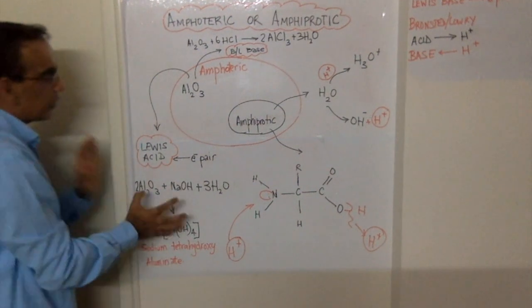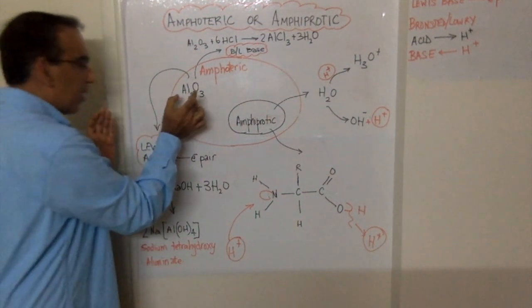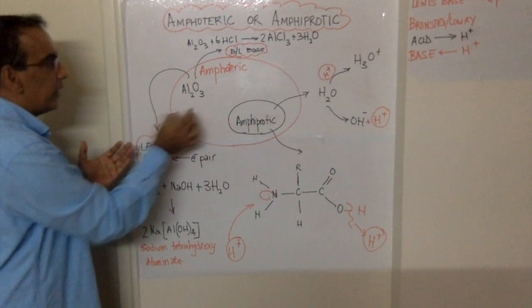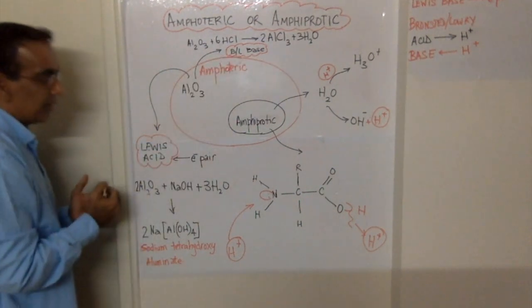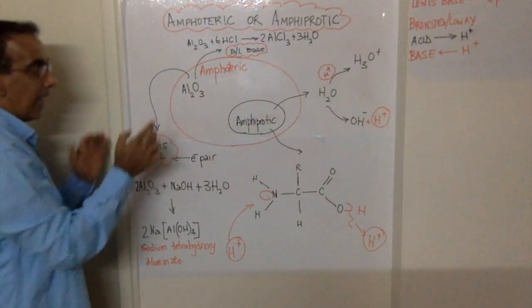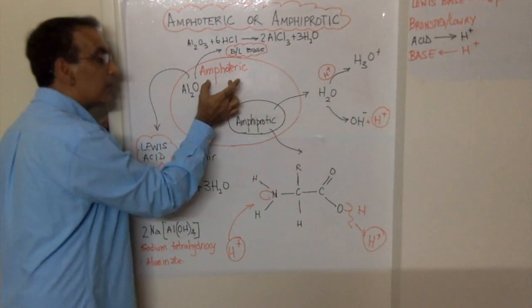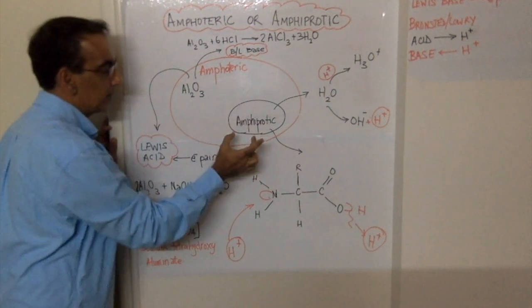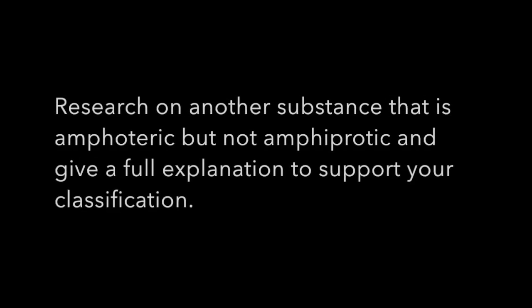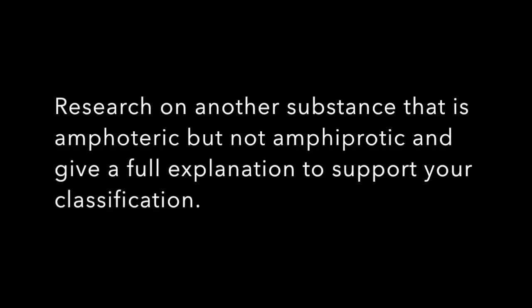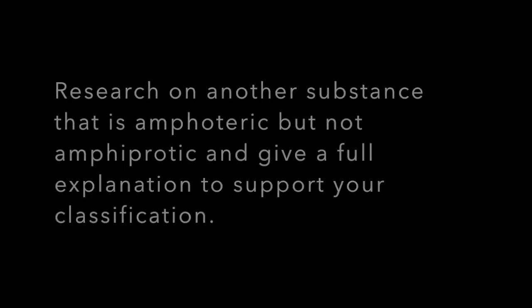So here you can see that aluminum oxide, which behaves as both an acid and a base, is amphoteric, but not amphiprotic.